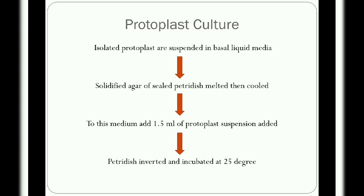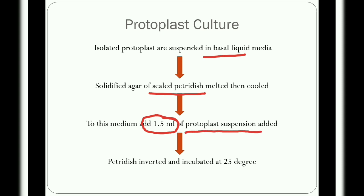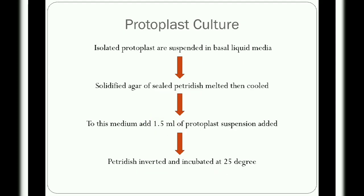Isolated protoplasts can be cultured in several ways. The agar embedding technique using a petri dish is commonly followed. The isolated protoplasts are suspended in basal liquid medium like MS medium at a density of 1×10⁵ protoplasts per 4 ml. The solidified agar of a silk petri dish is melted and cooled, then 1.5 ml of protoplast suspension is added. The petri dish is then inverted and incubated at 25 degrees Celsius with a 16-hour light period at about 500 lux, with periodic transfer to fresh medium.